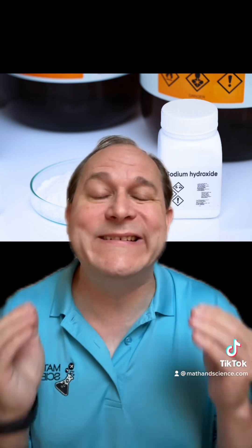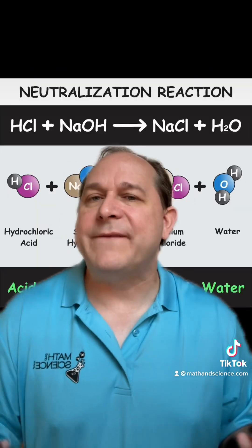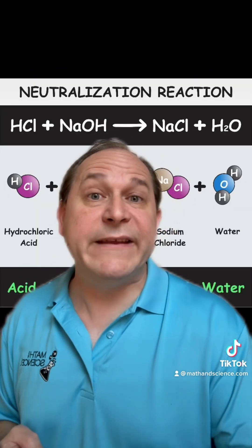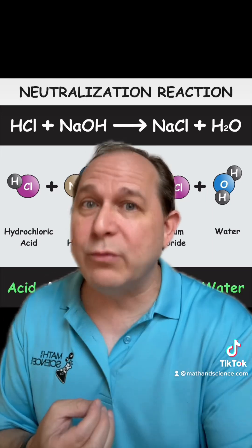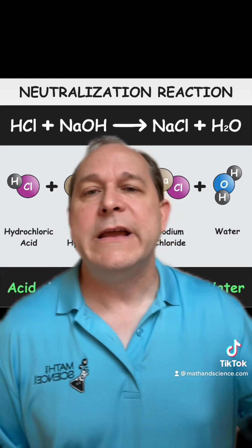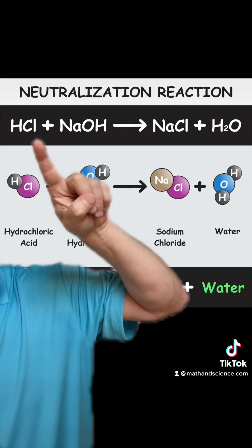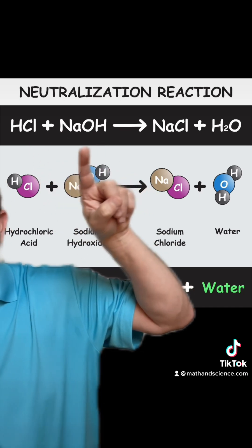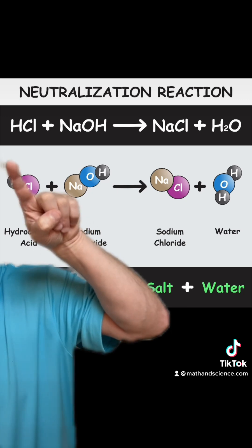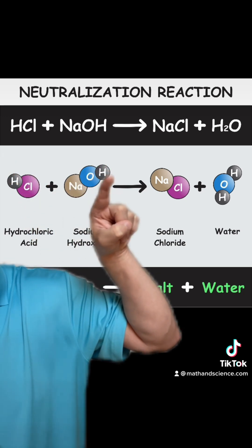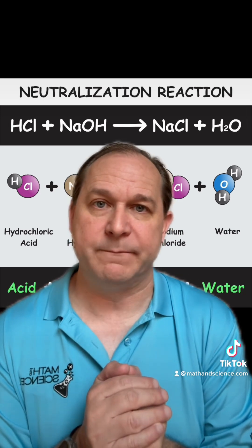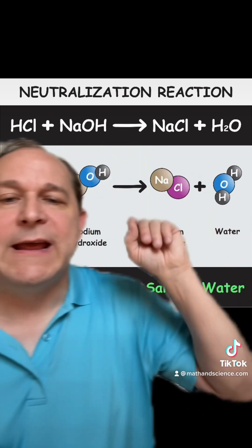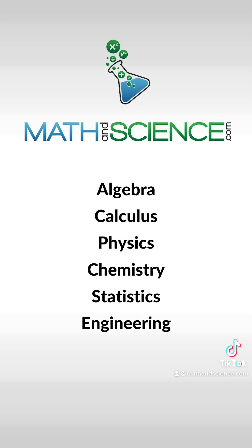An acid donates protons in solution, and a base likes to react with or accept protons. So you might guess if acids donate protons in solution and bases love to react with protons in solution, then acids and bases, when they come together, are going to like to party — because one's donating protons and the other is accepting or reacting. Here's the most famous example of that: hydrochloric acid and sodium hydroxide. The hydrogen ion pops off and floats free in solution and reacts with the OH in the hydroxide, making water. Water is extremely stable and loves to form, and all you have left over after that is salt and water. Learn anything at mathandscience.com.